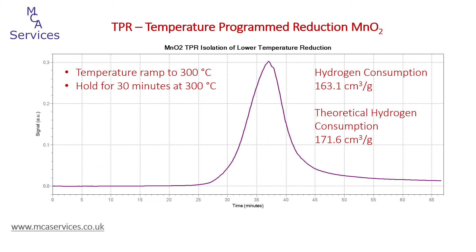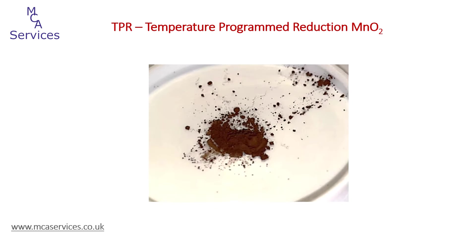The slight difference in hydrogen consumption could well be the failure of the peak to fully return to its baseline. It's also a good idea to look at the sample once the reduction experiment is finished and the furnace has cooled to room temperature. We removed the sample and found a brown powder, in excellent agreement with the expected colour of Mn3O4. So both the hydrogen consumption and the colour of the product support the intermediate phase being Mn3O4.